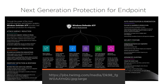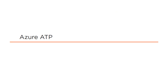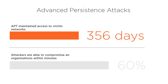Finally, there is Azure ATP. It is scary that Advanced Persistent Threats or APT usually maintain access to victim networks for almost a year — meaning it takes a company a year to detect they are being hacked. 60% of attackers are able to compromise organizations within minutes. This means there is a clear problem in detecting attacks happening in organizations.